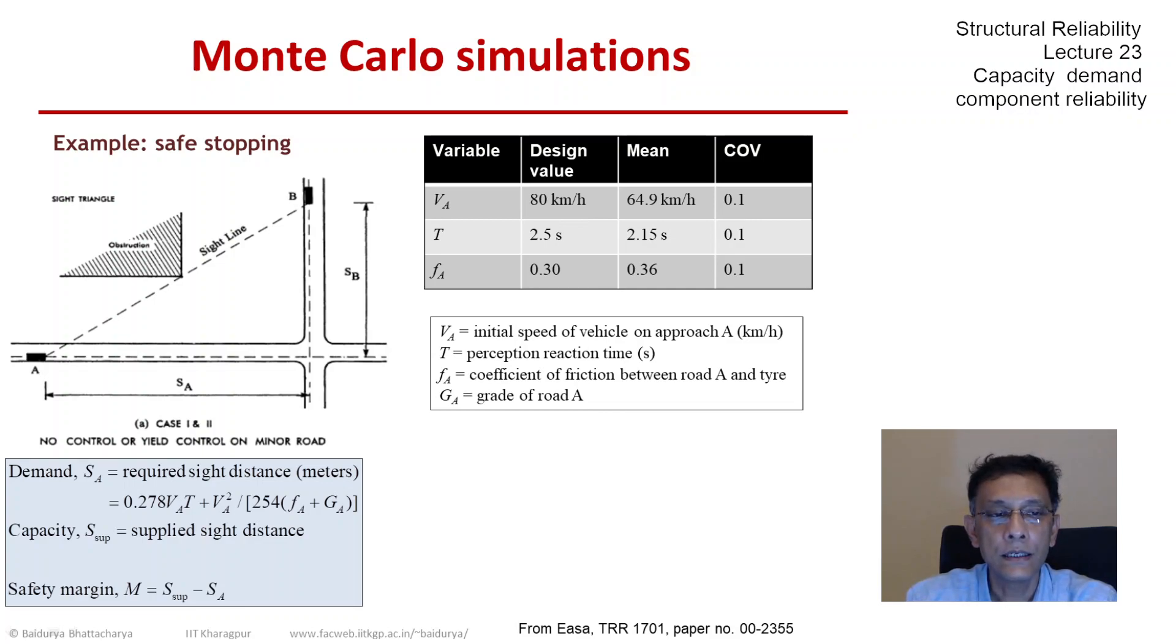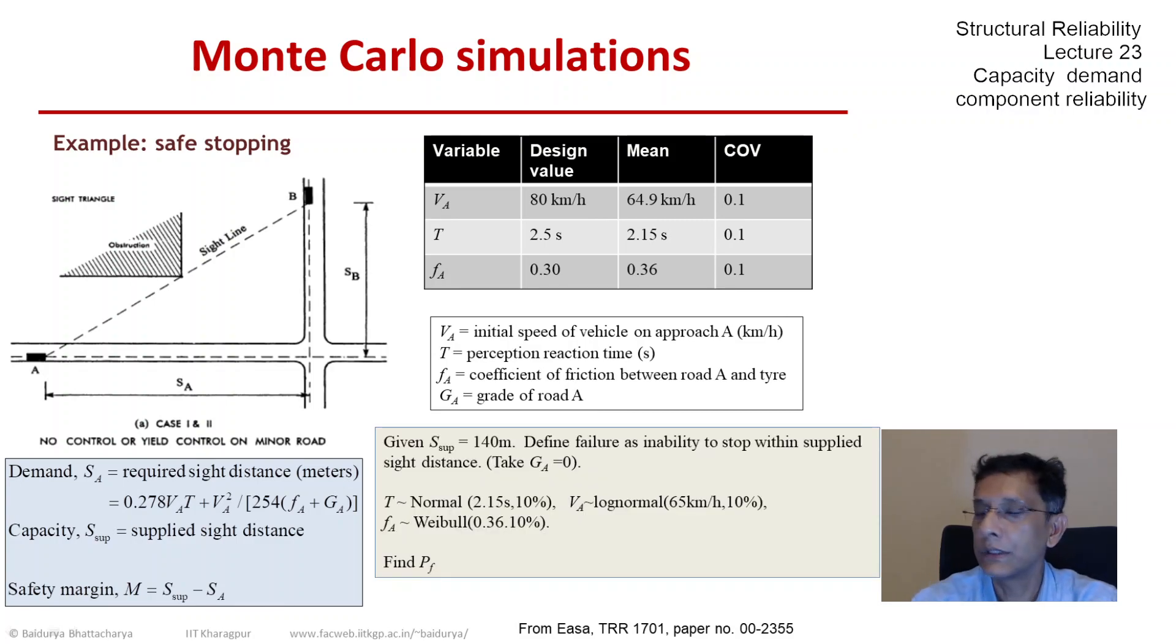V_A, T, and F_A. And now the question is, given a particular value of the supplied sight distance, which is 140 meters, what would be the probability of failure when failure is defined as inability to stop within that distance?